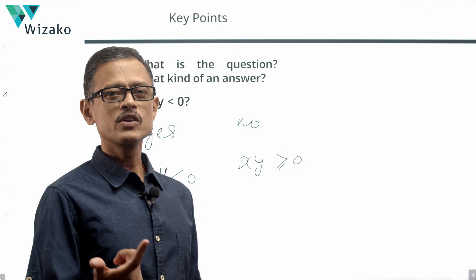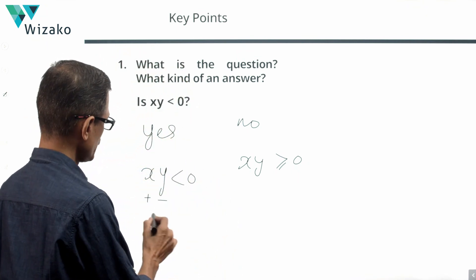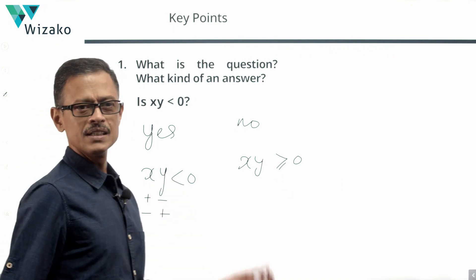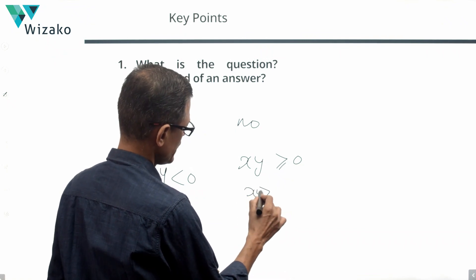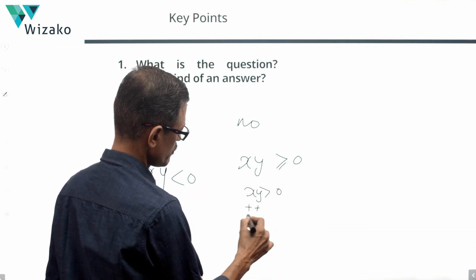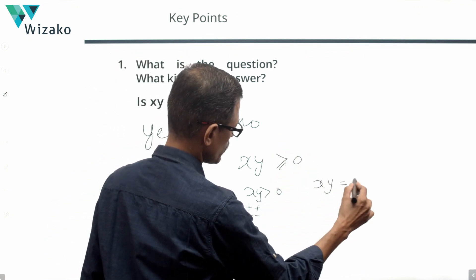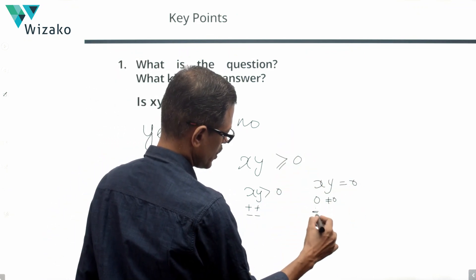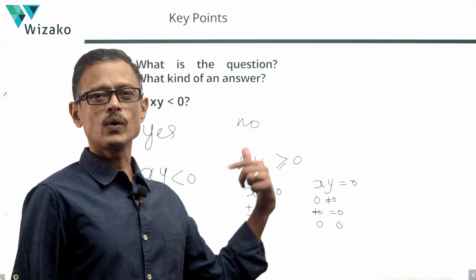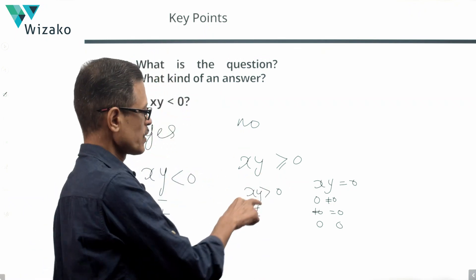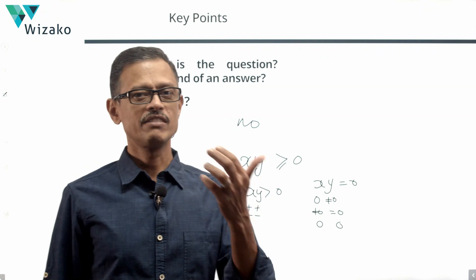The product of two numbers will be negative when one of them is positive and the other is negative — so X positive and Y negative, or X negative and Y positive. For the case where both are positive or both are negative, XY will be greater than 0. XY will be equal to 0 when at least one of the two numbers is 0. The product is negative when one is positive and the other is negative.